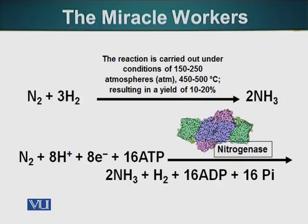This reaction occurs in nature also. Combining nitrogen with hydrogen happens in the roots of certain plants. These plants have a special type of bacteria that make a remarkable compound called nitrogenase. This enzyme can perform the same reaction at ambient temperature — whatever the temperature is outside — taking a molecule of nitrogen, combining it with hydrogen, and producing ammonia.